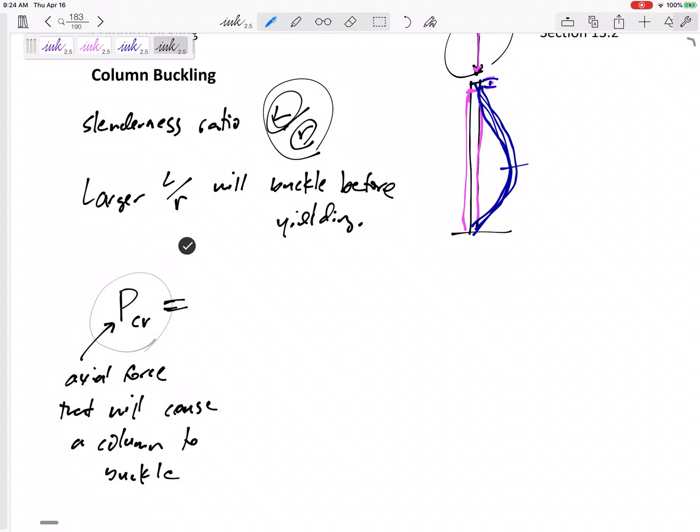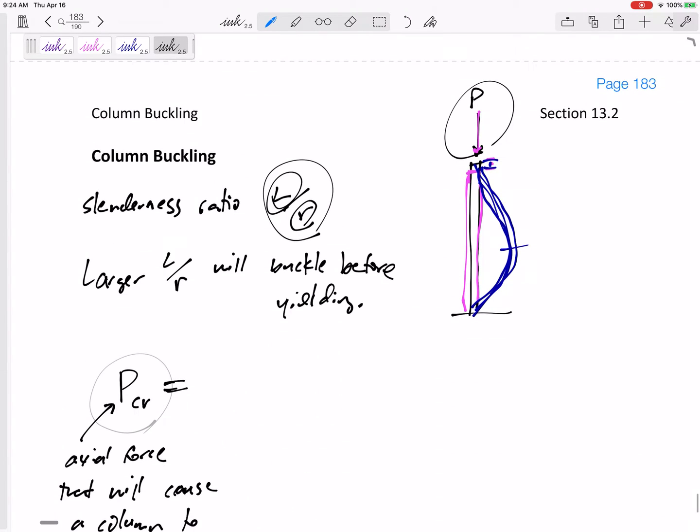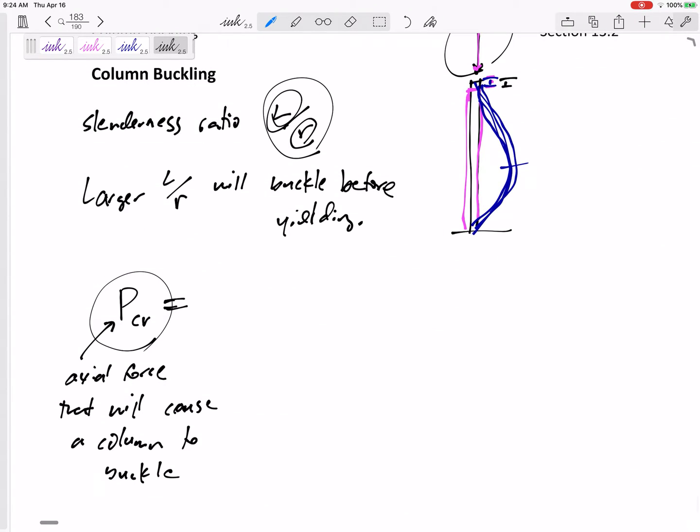And so we can calculate the force, say, hey, let's make sure this doesn't buckle. Let's see what force will cause it to buckle. And then we can maybe kind of compare that to the force that would cause it to yield. Oh, this one buckles before it yields, but some shorter ones will yield before it buckles.